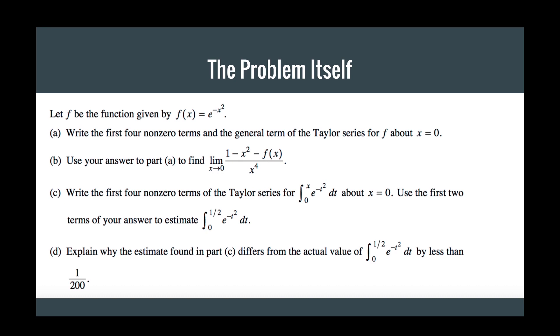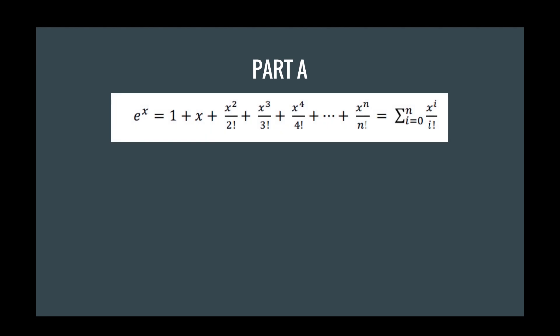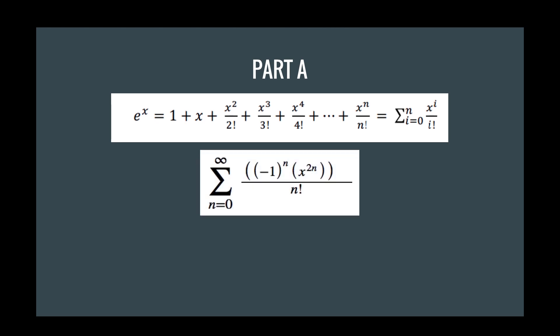So let's start with part A, and part A asks us for the first four non-zero terms of e to the negative x squared. But we don't know what e to the negative x squared is, but what we do know is e to the x, and we know that that Maclaurin series or Taylor series is equal to 1 plus x plus x squared over 2 factorial and so on until x to the n over n factorial. So now we just substitute the x with the negative x squared instead, and then we'll get negative 1 to the n multiplied by x to the 2n all over n factorial of the infinite sum from n equals 0.